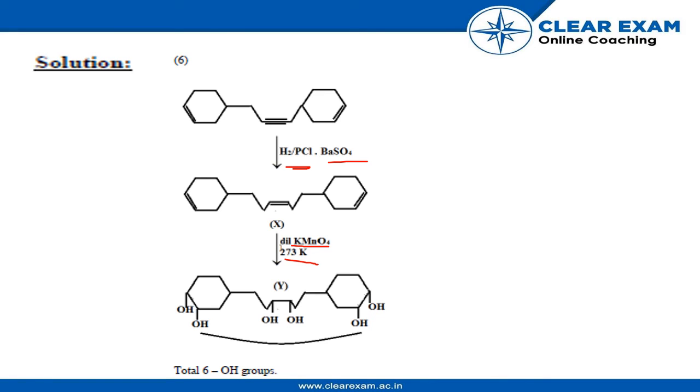So total hydroxyl groups will be one, two, three, four, five, six - that is here, here, and here. Total hydroxyl groups will be six.